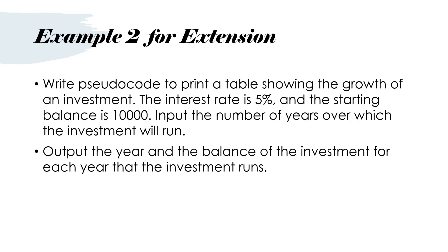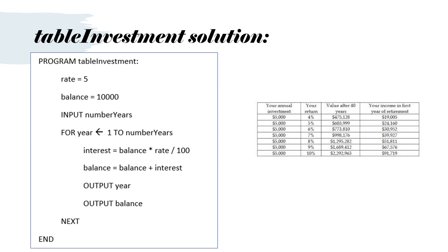Another example for extension. Write pseudocode to print a table showing the growth of an investment. The investment rate is 5% and the starting balance is 10,000. Input the number of years over which the investment will run, and output the year and the balance for each year. Program table investment. Rate equals 5, balance equals 10,000. INPUT number years. FOR year from 1 to number years. Interest equals balance times rate divided by 100. Balance equals balance plus interest. OUTPUT year. OUTPUT balance. NEXT. Then END.